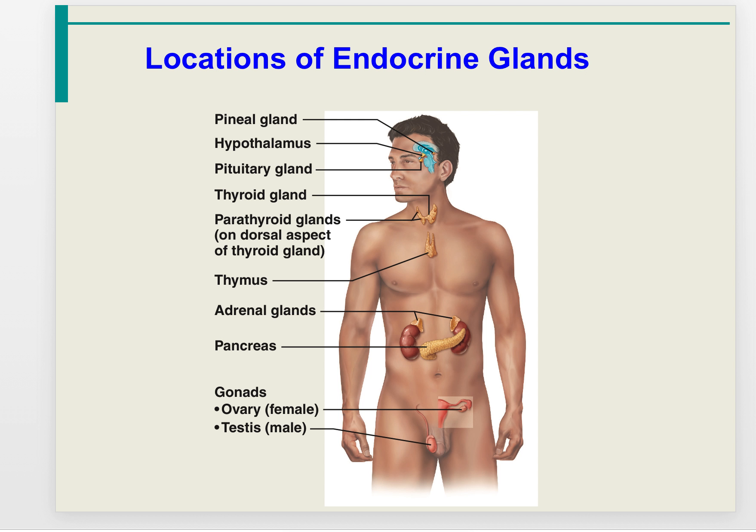The major endocrine glands include the pineal gland, hypothalamus, pituitary gland, thyroid gland, parathyroid gland, thymus, adrenal glands, pancreas, and gonads. We'll look at each of these glands throughout this lecture.